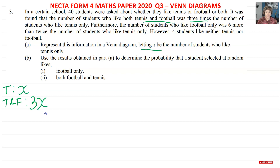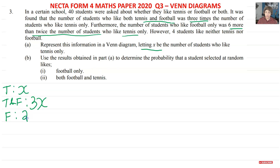Those who like football only — we were told that was six more than twice the number who like tennis only. Twice the number who like tennis is 2x, plus six more, so football only is 2x + 6. And the students who like neither — neither football nor tennis — that's 4.